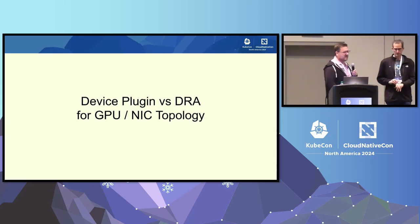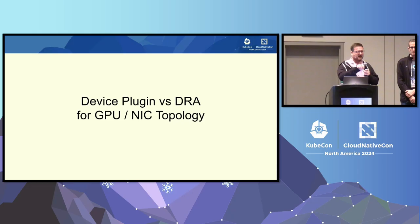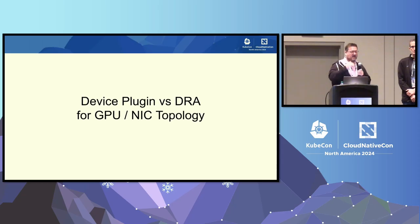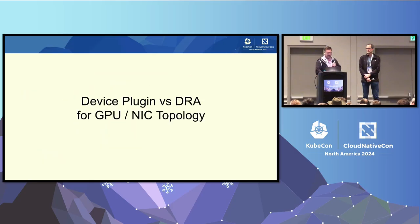One key thing that may be subtle: with device plugins, the decision of exactly which devices are chosen is left up to the driver running on the node. This can become a problem when asking for multiple devices because those drivers make independent decisions. With DRA, we move that decision-making from the node plugin to the scheduler. That allows us in our claims to provide additional constraints, enabling the scheduler to look across drivers at multiple devices and make a coordinated decision.